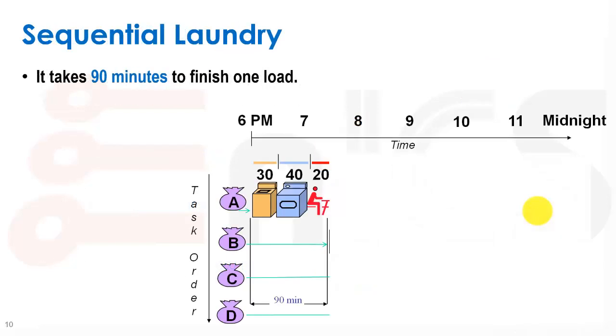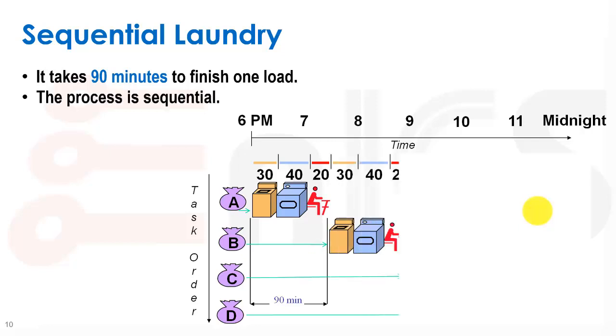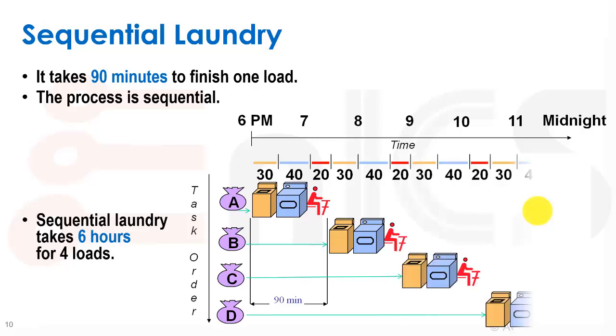If we would do this sequentially and just drive in each of these operations one after the other, as we saw before, one load of laundry takes 90 minutes to finish. After finishing, we can put the second load of laundry in and that's another 90 minutes, so a total of 180 minutes.